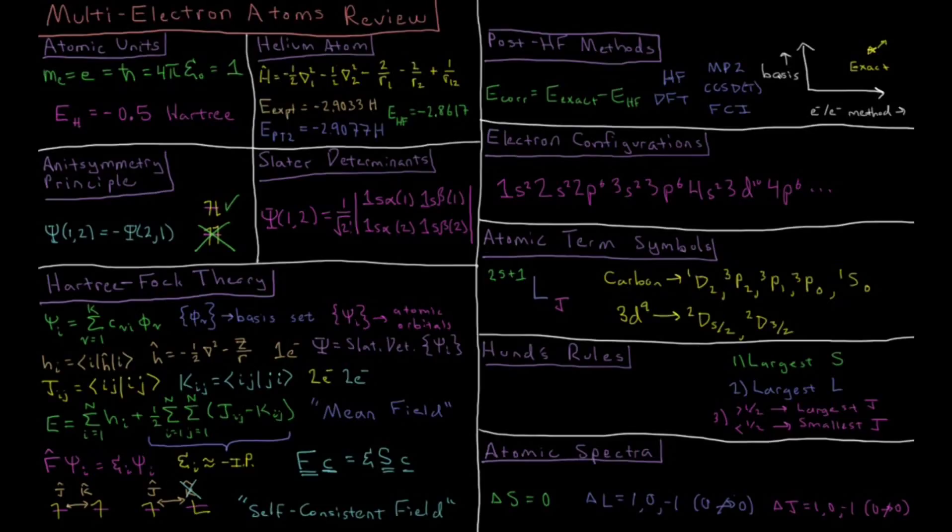This video is a review of the chapter on multi-electron atoms. In atomic units, we have the mass of the electron, the charge of the electron, reduced Planck's constant h-bar, and 4πε₀, all set equal to 1 such that we express energies and our Hamiltonian in convenient units. This makes the energy of a hydrogen atom equal to -0.5 Hartrees.